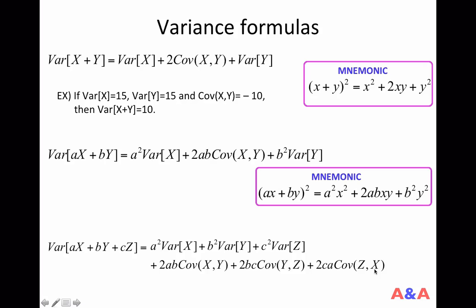In the next class, we are going to generalize this variance formula to allow more than two or three random variables. So in general, there can be n random variables. You can own n businesses and you are interested in the total risk — the variance of the total sales, for example. We are going to learn that in the next class.